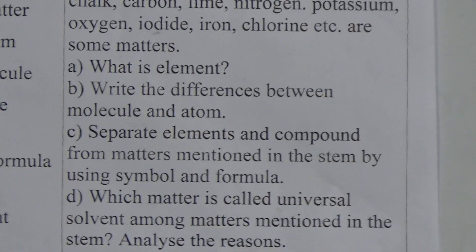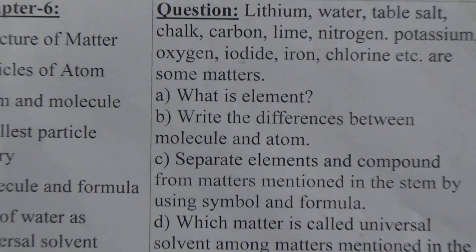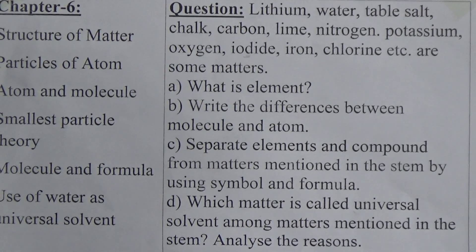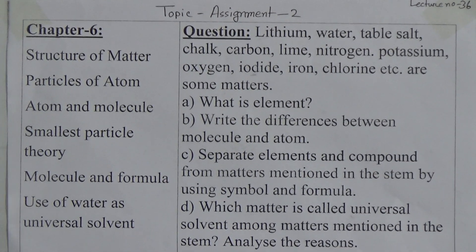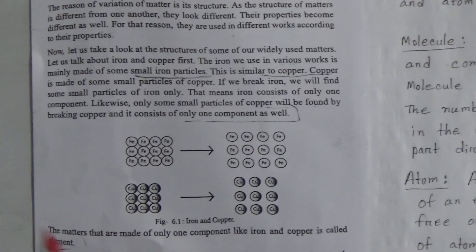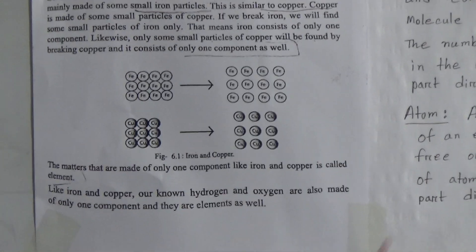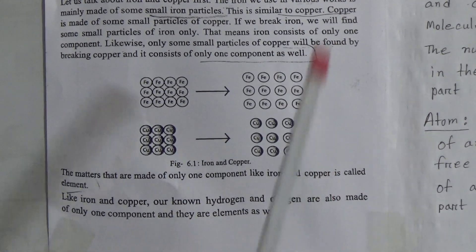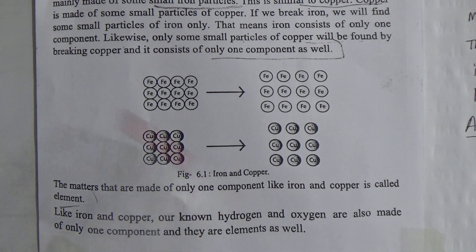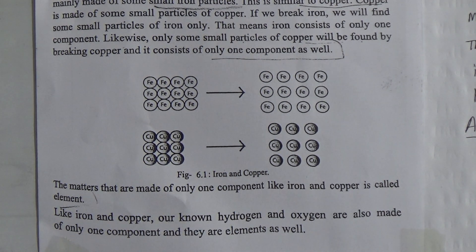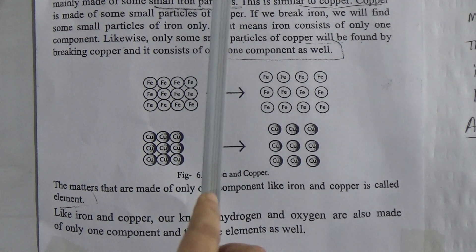What is element? In your book, if you open page number 61, you can find the answer for element. The answer is: the matter that is made of only one component is called element. For example: iron, copper, oxygen, hydrogen. That means if we break an element, we will find only one kind of component. This is called element. So question A answer is done.